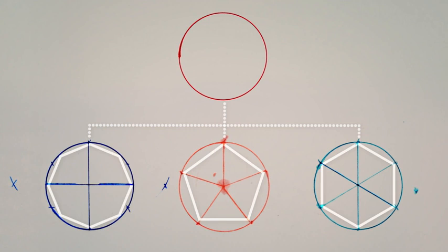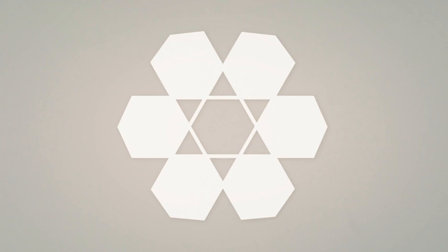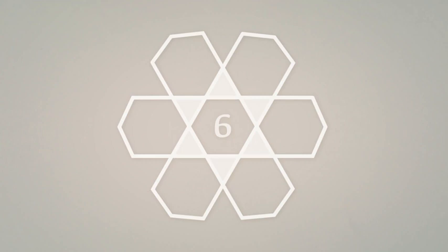There's an easy way to determine whether any pattern is based on fourfold, fivefold, or sixfold symmetry. Most contain stars surrounded by petal shapes. Counting the number of rays on a starburst, or the number of petals around it, tells us what category the pattern falls into. A star with six rays, or surrounded by six petals, belongs in the sixfold category.